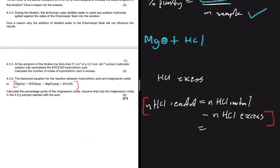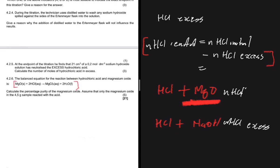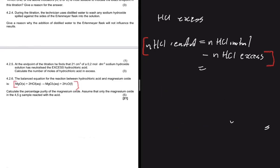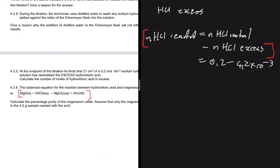The number of moles of HCl that reacted with the magnesium oxide equals the initial moles of HCl minus the moles of HCl in excess. Initially we had some HCl; it reacted with MgO, and the remaining excess HCl then reacted with NaOH. So: moles of HCl reacted = 0.2 − 4.2 × 10⁻³ = 0.196 moles.